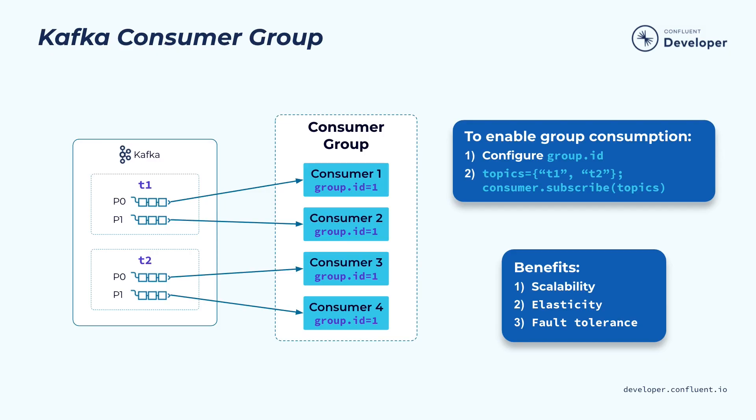In Kafka, we separated the way how we store the data from the processing of that. The processing is typically done in the consumer applications, and consumer group is a great way to scale out those consumer instances. Once you define a consumer group, the load of the data you are subscribing to can be divided evenly among those consumers, and they can be processing those records or events in parallel.